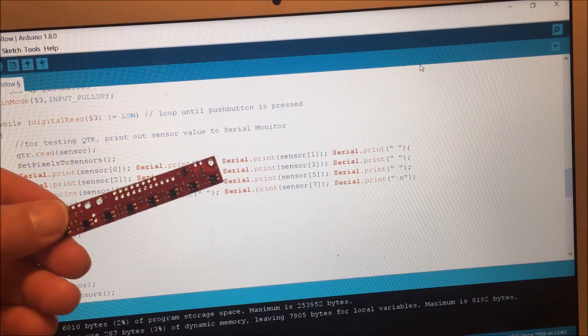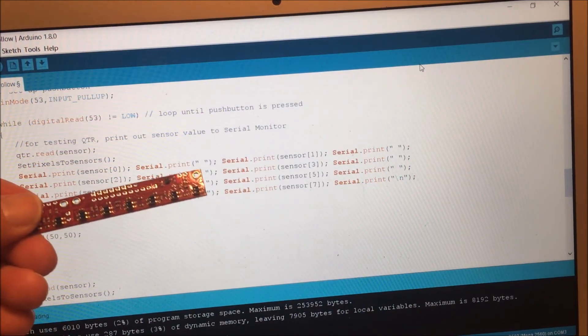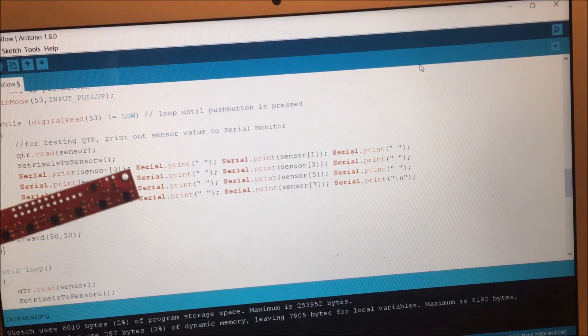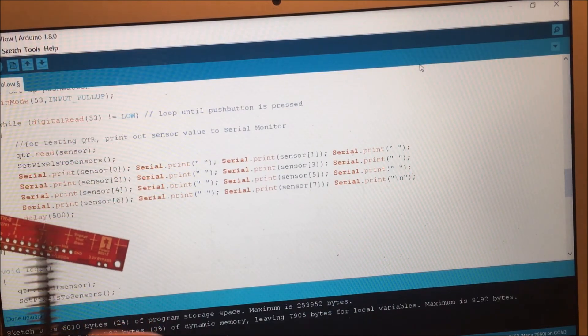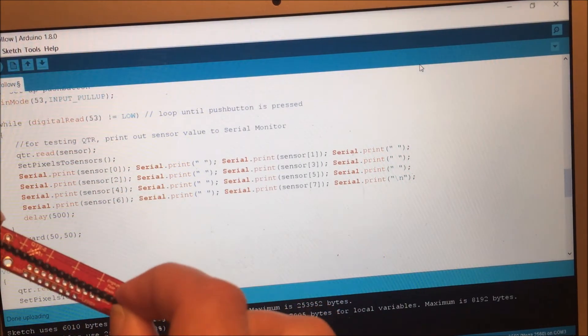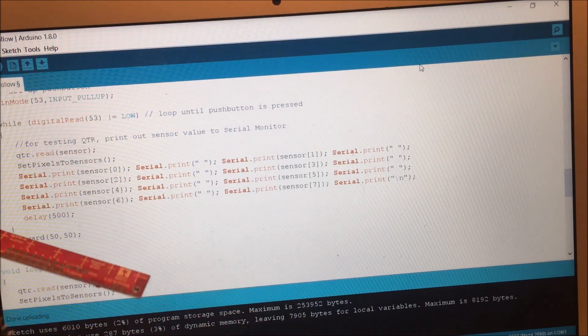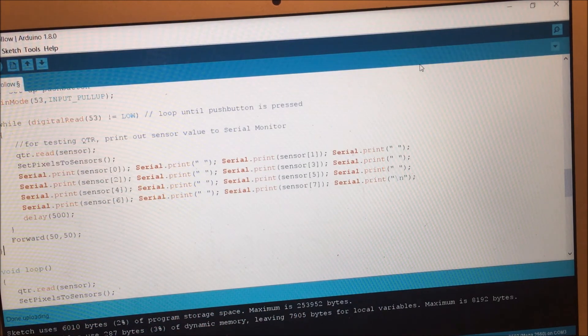The first step will be to connect the QTR sensor to your Arduino board. This may be one of the most difficult parts of soldering this thing. Instead of soldering the wires directly to it, you may want to use the header that comes with it. Just make sure you get it on the correct side so it's not in the way of the IR sensors.